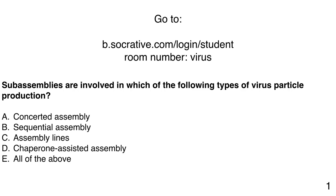Question: sub-assemblies are involved in which of the following types of virus particle production — concerted assembly, sequential assembly, assembly lines, chaperone-assisted assembly, or all of the above? The answer is all of the above. Concerted assembly and sequential assembly both involve sub-assemblies. Assembly lines are part of every assembly — even the influenza concerted pathway has a sequence of events. And of course chaperone-assisted assembly involves sub-assemblies as well.